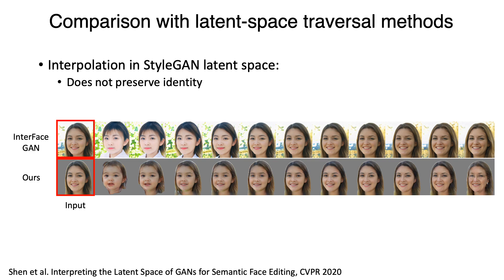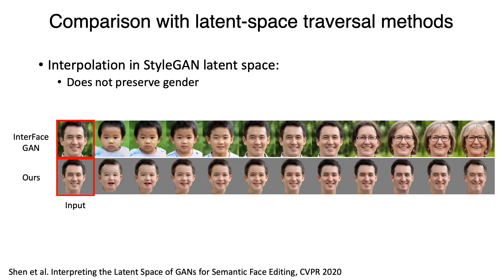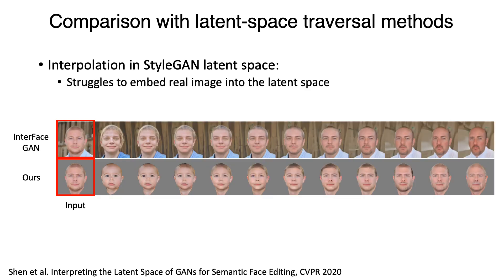Finally, we compare our approach with InterFaceGAN, a method that finds transformations by traversing the StyleGAN latent space. For a fair comparison, we generated the original image from a random StyleGAN latent code. As you can see, InterFaceGAN struggles to preserve important features such as the person's identity or gender. When using a real image, InterFaceGAN also struggles to embed the correct identity into the latent space, as well as generating full lifespan transformations.